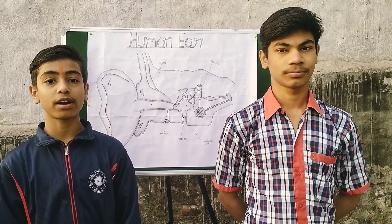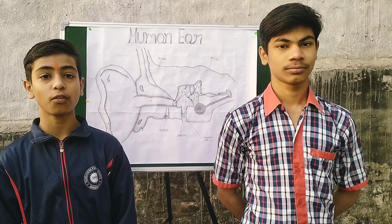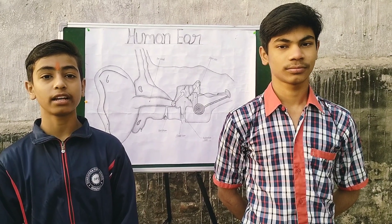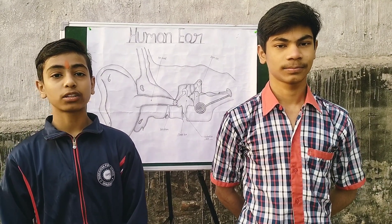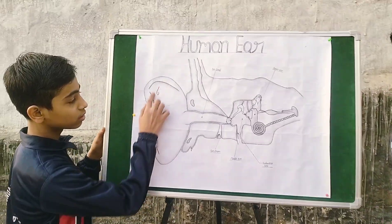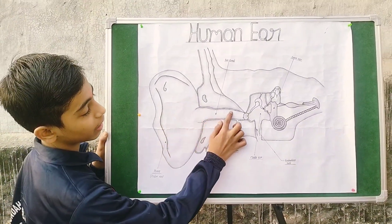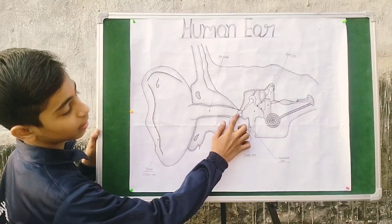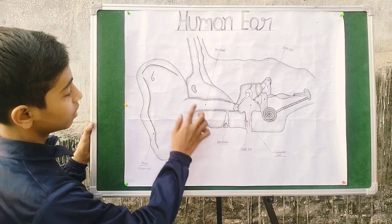Sound is a form of energy that creates the sensation of hearing in our ear. The main parts of the human ear are: pinna, ear canal, ear drum, middle ear, and inner ear.